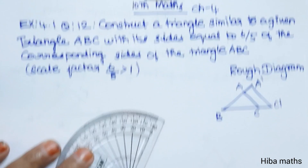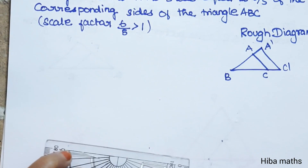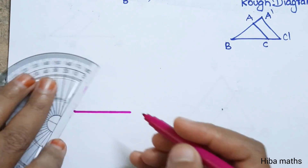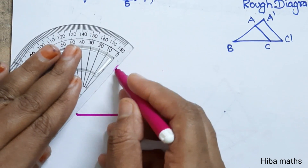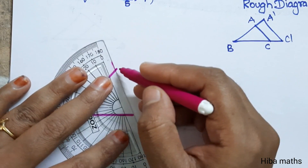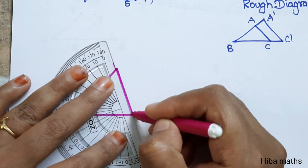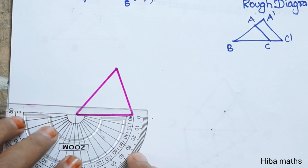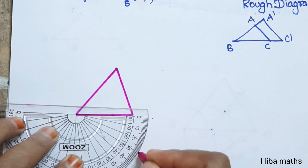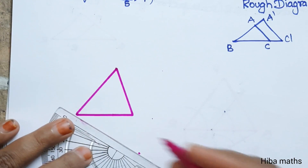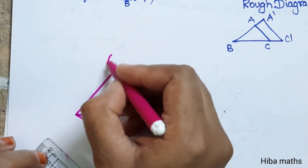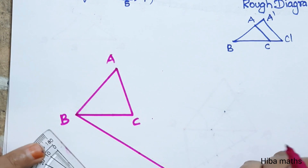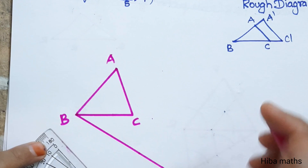Let's start with a triangle. We draw an acute angle triangle, with an acute angle of 30 degrees, and label the vertices A, B, and C. Now we have a scale factor of 6/5.